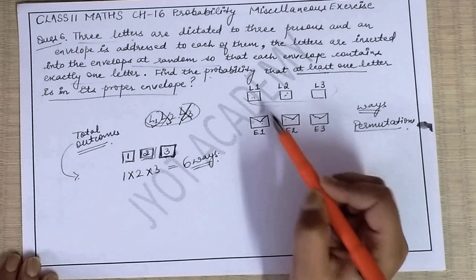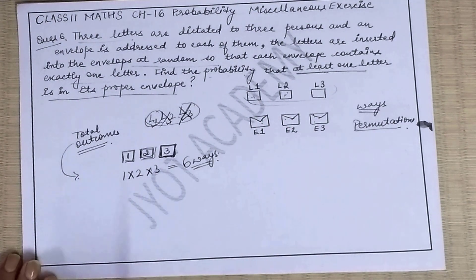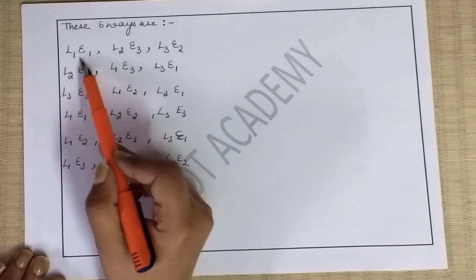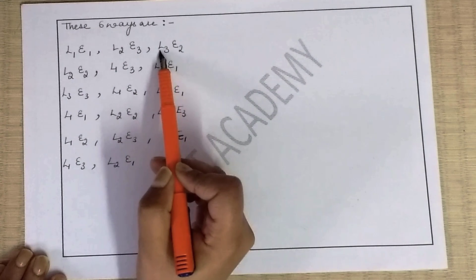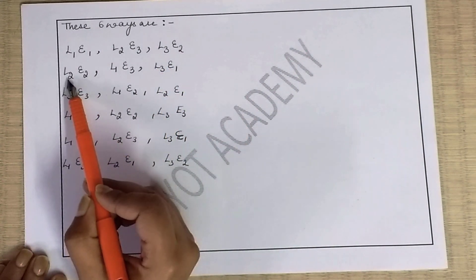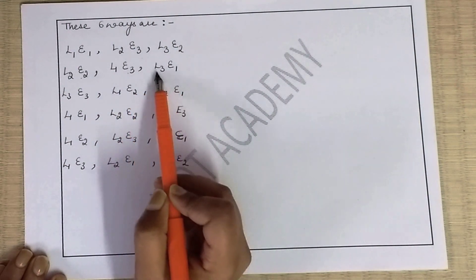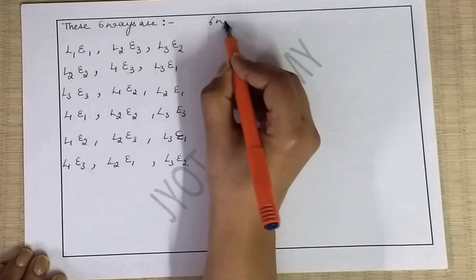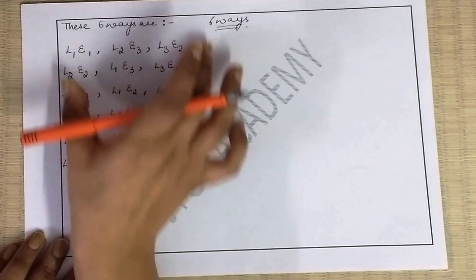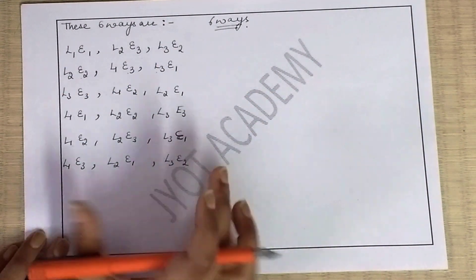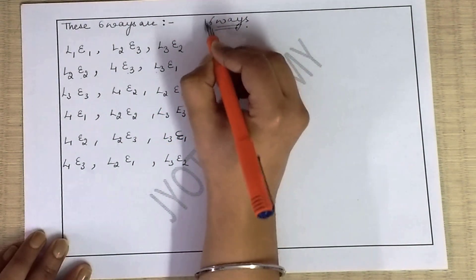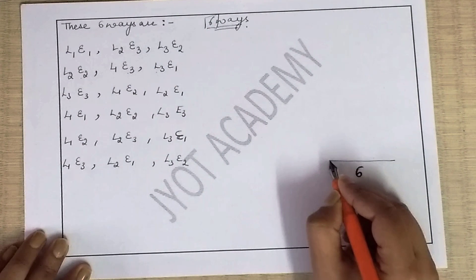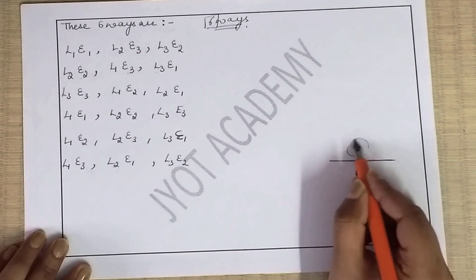Here are all six arrangements: (1) Letter 1 in envelope 1, letter 2 in envelope 3, letter 3 in envelope 2. (2) Letter 2 in envelope 2, letter 1 in envelope 3, letter 3 in envelope 1. And the remaining four arrangements cover all other permutations of letters 1, 2, and 3 across envelopes 1, 2, and 3.